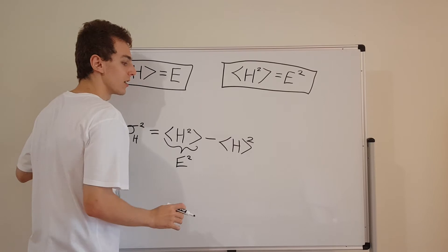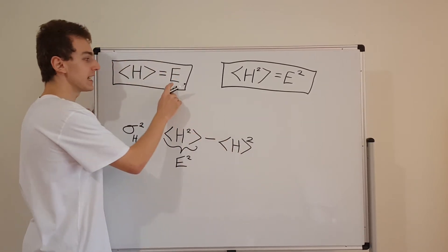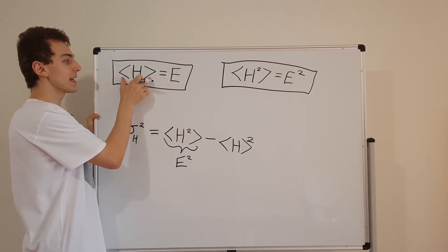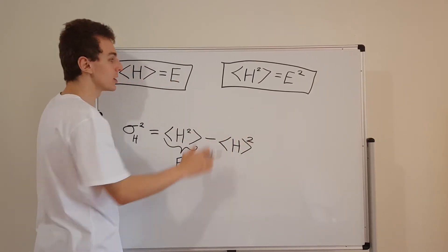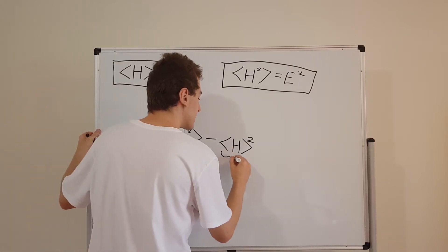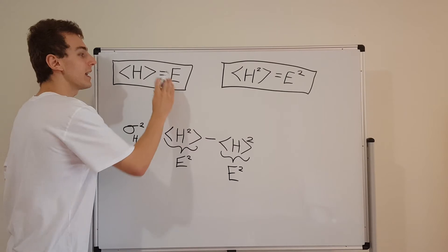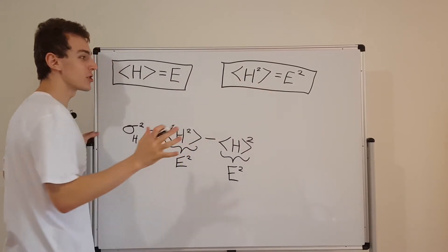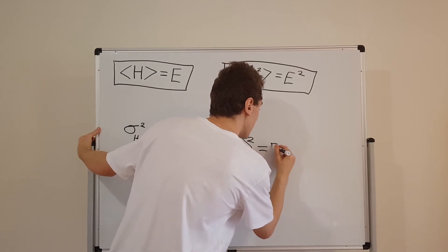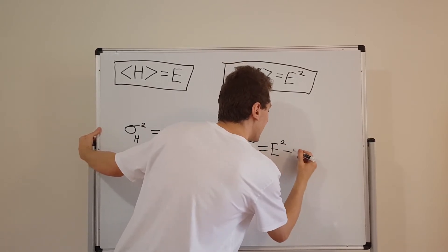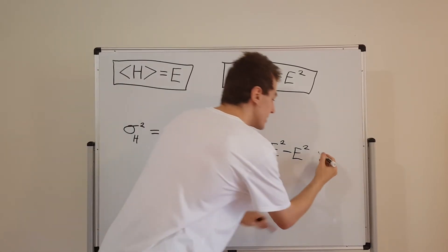What about the second term? Well, the expectation value of H is just E. So when we find the expectation value of H, we get E — but then we have to square it. So if we square that, that's again going to give us E squared. So you might be able to see why these relationships are so special.